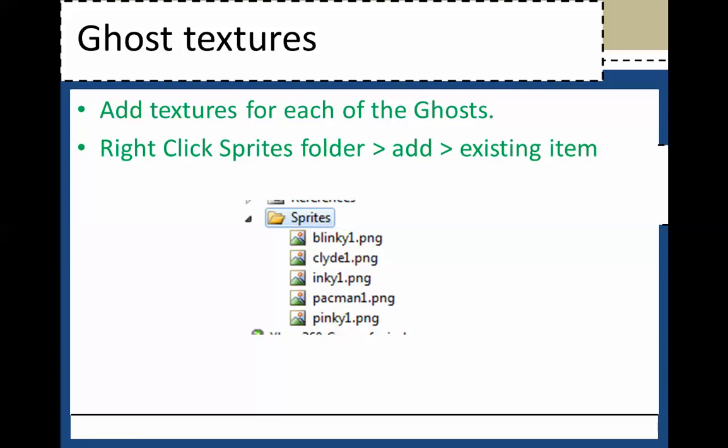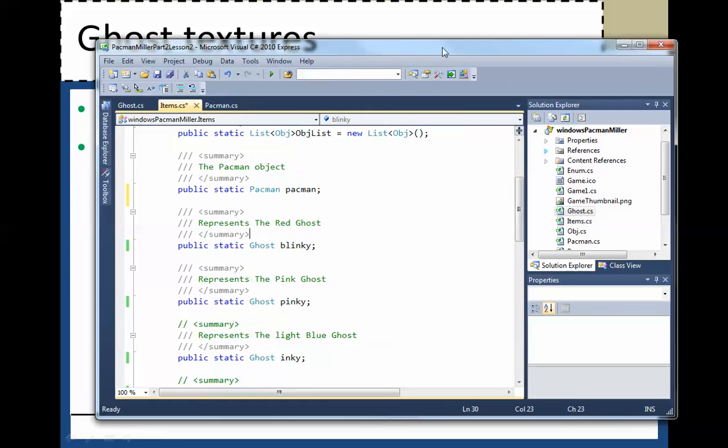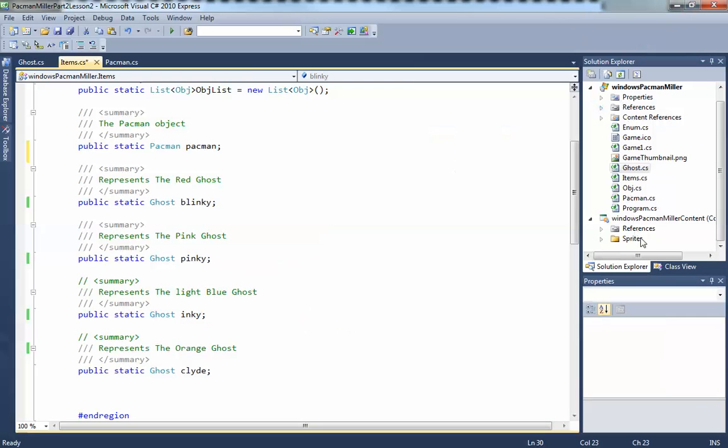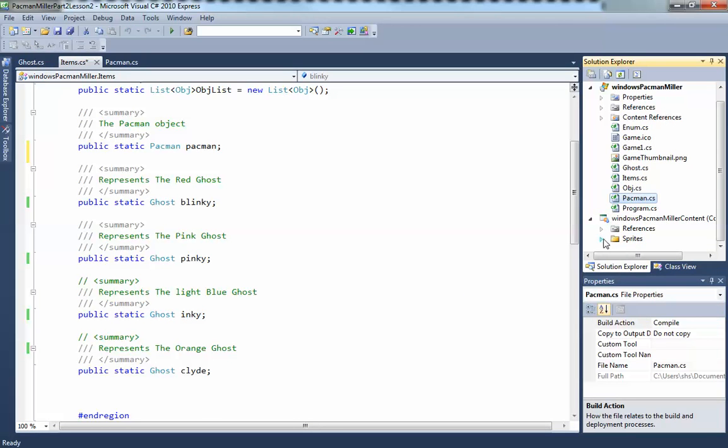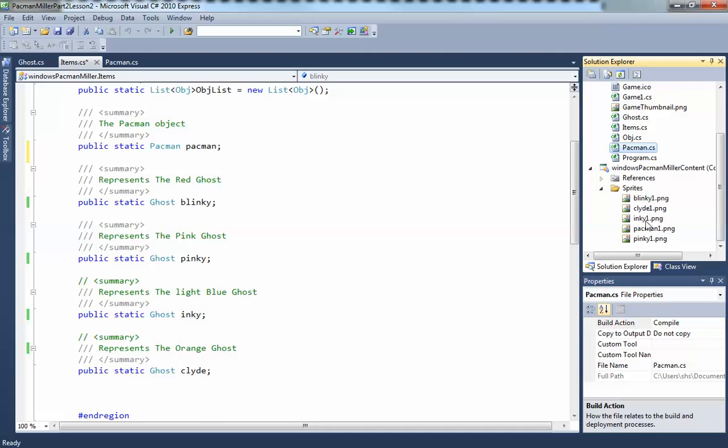You're going to come over here and go right click on sprites, say add existing item, and add all of them. It should look a little bit something like this. You already have your Pac-Man.